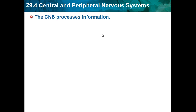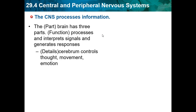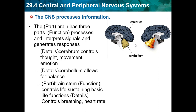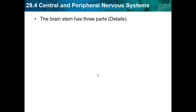The CNS processes information. The brain functions, processes, and interprets signals, and generates responses — it is basically the control center. The cerebrum controls thoughts, movement, and emotion. The cerebellum allows for balance and is at the very back of the brain. The brainstem controls life-sustaining basic functions like breathing and heart rate. The brainstem has three parts: the midbrain controls some reflexes, the pons regulates breathing, and the medulla oblongata controls heart function, swallowing, and coughing.